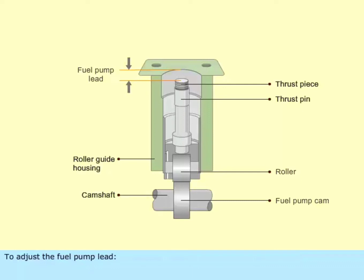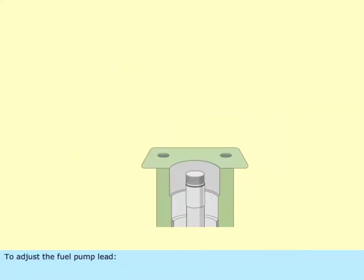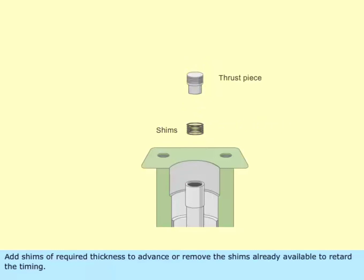To adjust the fuel pump lead, remove the thrust piece using a special extraction tool. Add shims of required thickness to advance or remove the shims already available to retard the timing.